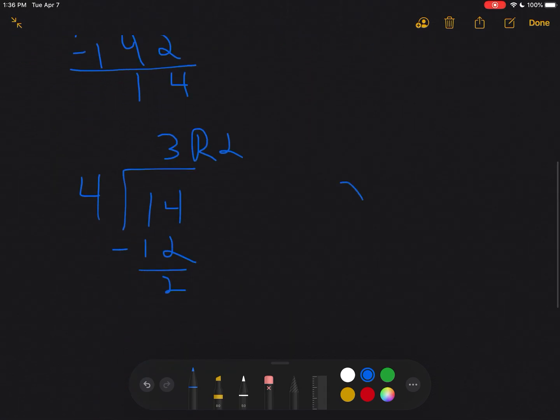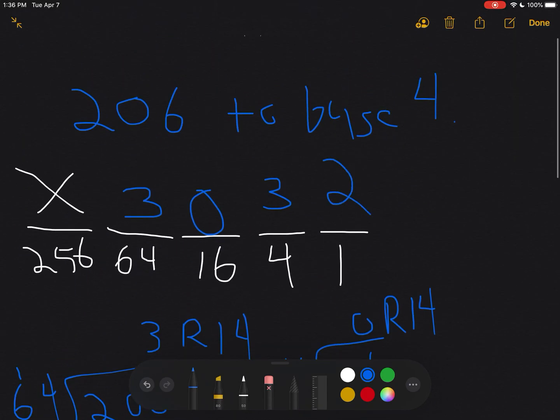And then finally, I've got two left. You can divide two by one if you want, it's not very exciting. I must need a two here, and then I need to remember to tag it with my base.